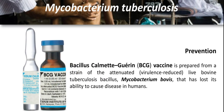Bacille Calmette-Guérin (BCG) is a vaccine for tuberculosis. This vaccine is not widely used in the United States; however, it is often given to infants and small children in other countries where TB is common. BCG does not always protect people from getting TB. BCG vaccination should only be considered for children who have a negative TB test and who are continually exposed and cannot be separated from adults who are untreated or ineffectively treated for TB disease, or where the child cannot be given long-term preventive treatment.